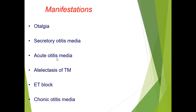Adenoid hypertrophy can cause otalgia due to blockade of the eustachian tube. It can also cause secretory otitis media and, when there is infection in the ear, acute otitis media. It can also cause retraction of the tympanic membrane, resulting in atelectasis, and chronic otitis media can also occur.